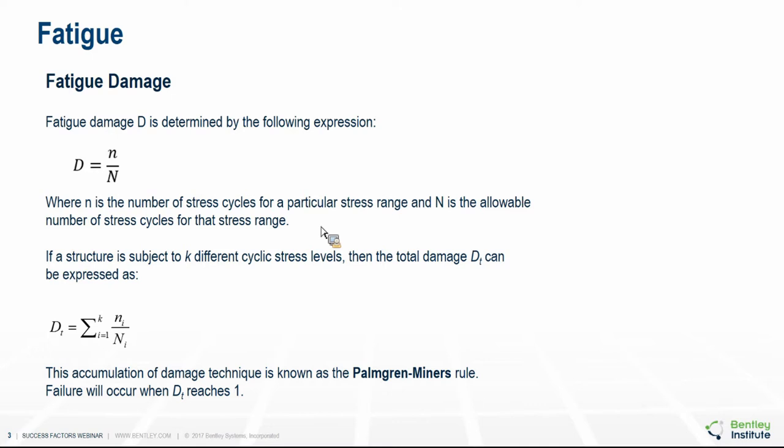Fatigue damage is defined by the number of stress cycles for a particular stress range divided by the allowable number of stress cycles for that stress range. For a structure subject to different stress ranges, the total damage is the sum of damages from each stress range. This accumulation of damage is known as the Palmgren-Miner's rule, and it forms the basis of all fatigue damage calculations.